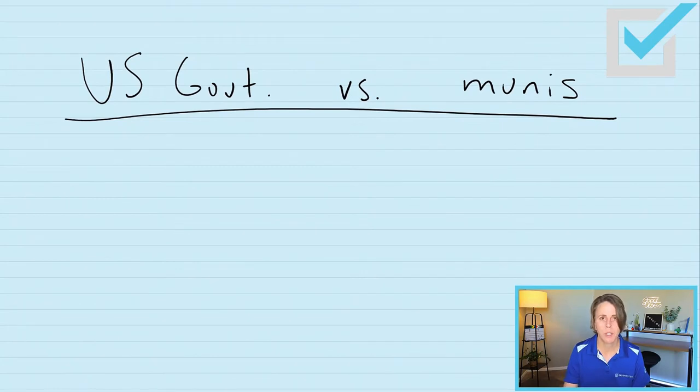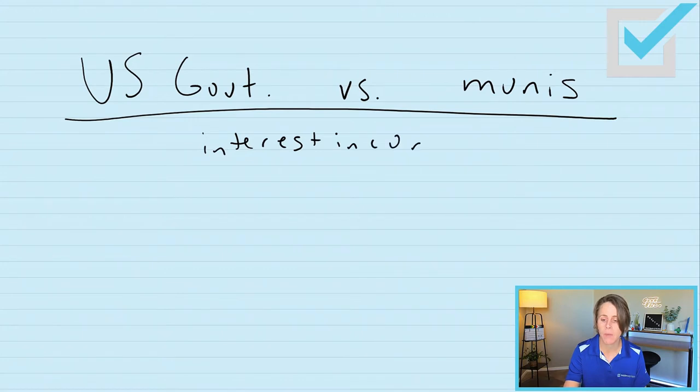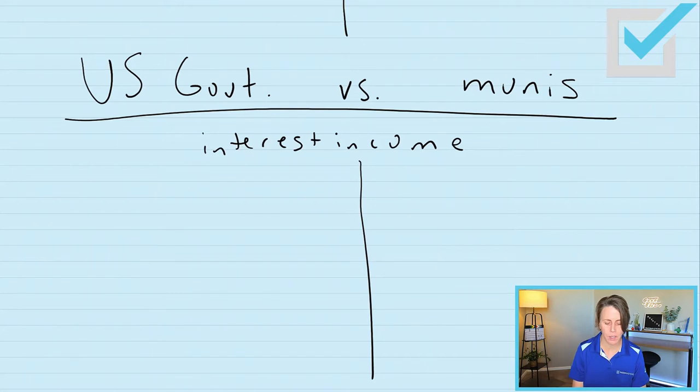I want to help you with something that many students get easily confused on, and that is the taxability of interest on bonds. A corporate bond's interest is fully taxable at the state and federal level, always. But we do have a special rule when we are talking about U.S. government securities versus municipal securities. So let me teach you a little trick here.